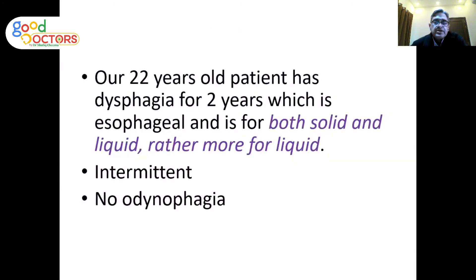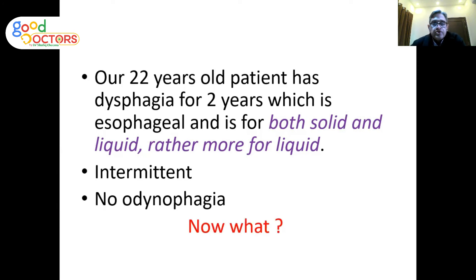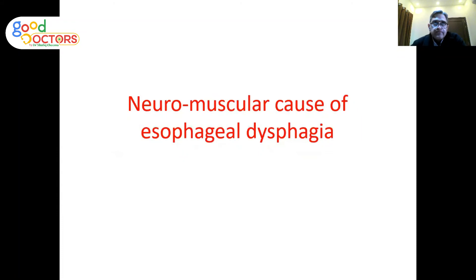Now suppose this patient has esophageal dysphagia that is for both solids and liquids — more for liquids — and it is intermittent with no odynophagia. Here we are talking about neuromuscular causes of dysphagia. Solids may pass due to gravity, but the patient has difficulty taking liquids and juices and starts feeling dysphagia.